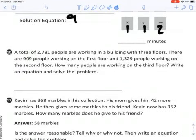Number ten, a total of 2,780 people are working in a building with three floors. There are 909 people working on the first floor and 1,329 people working on the second floor. How many people are working on the third floor? Write an equation and solve the problem. You can either do like one big long equation, or you can write two separate equations. Just make sure to solve the problem as well.